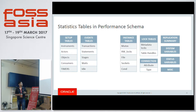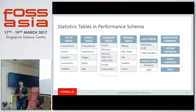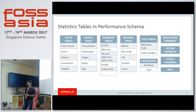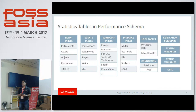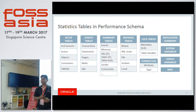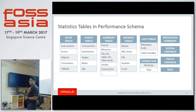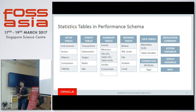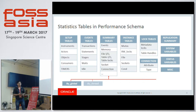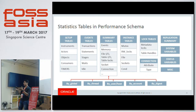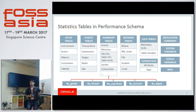The biggest thing in Performance Schema is the summary tables, which consolidate individual events into summarized output. We have summary tables for statements, stages, and waits; summary for memory allocation and deallocation; summary for file I/O, table I/O, sockets and connections. The summary is also categorized by different dimensions: global, by thread, by user, by host, by account (user+host combination), and by digest — which is for statements only.